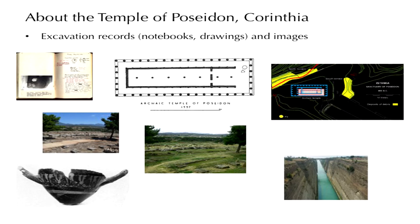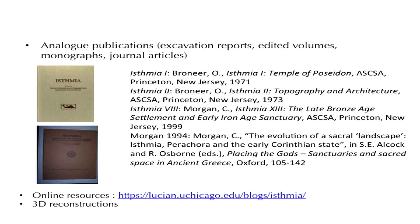Take, for instance, the ancient temple of Poseidon in Corinthia. There's a host of information about it, excavation records that come in the forms of notebooks and drawings and images, as well as a number of publications such as excavation reports or edited volumes, monographs, journal articles. In fact, there is a good collection of online resources that you can find at the address that you see on the slide.